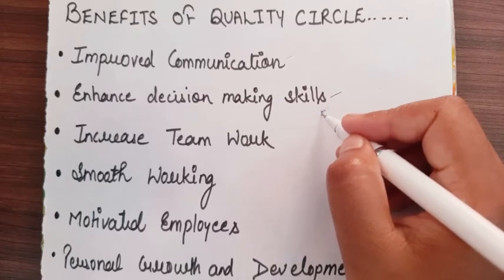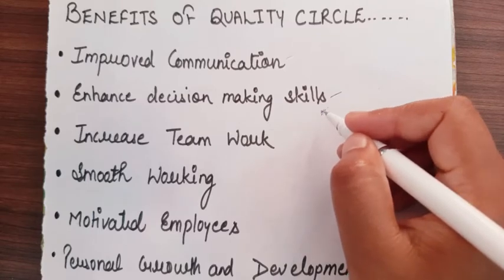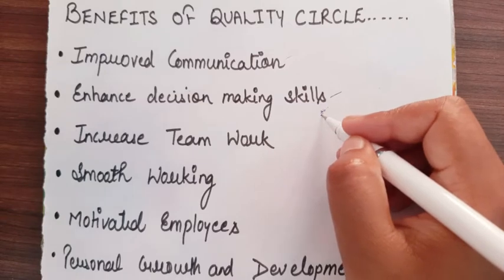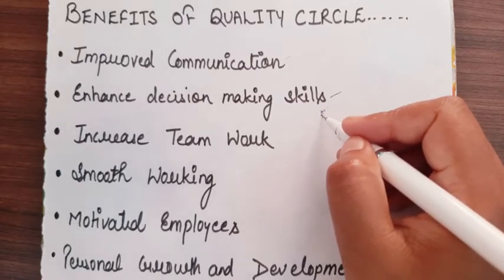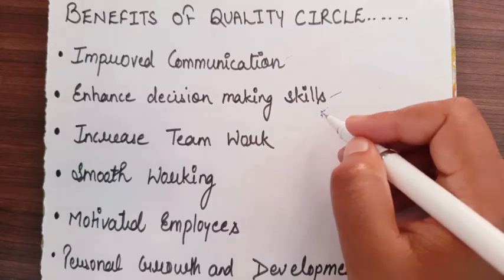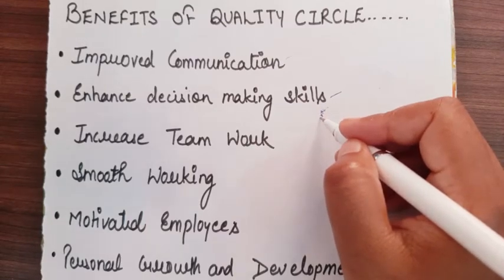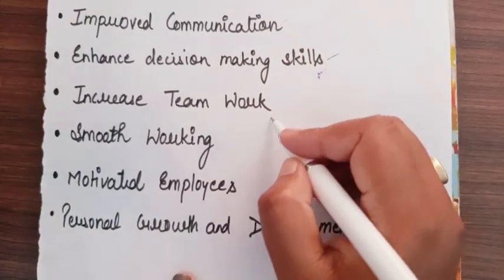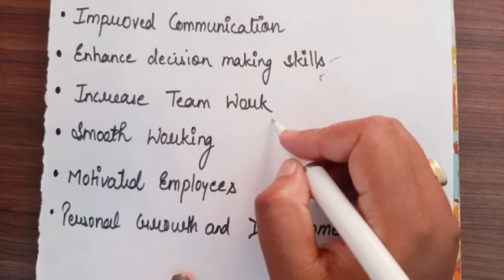When employees don't know their powers, responsibilities, and authorities, and don't have information on the decision-making process, through the quality circle an employee can clearly understand what responsibilities and authorities they have. This way the decision-making skills can be enhanced.